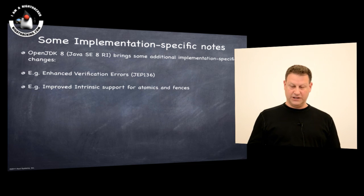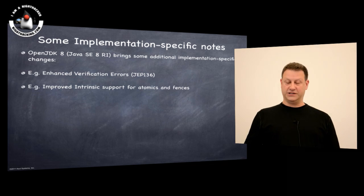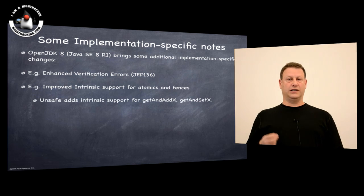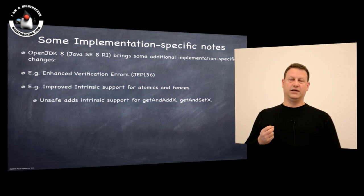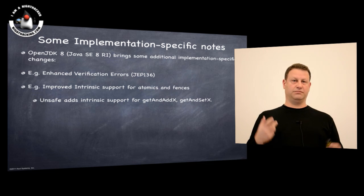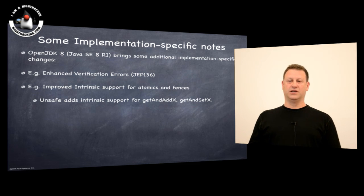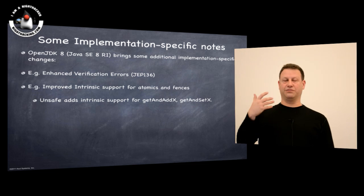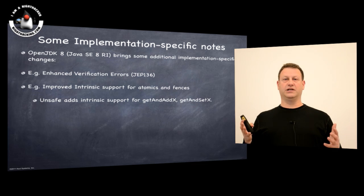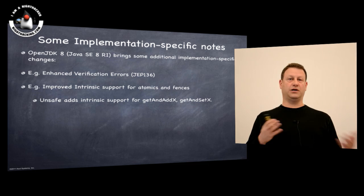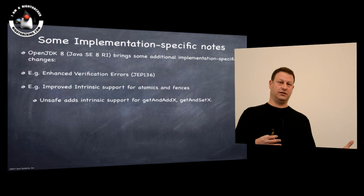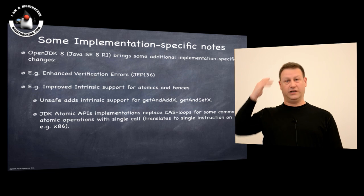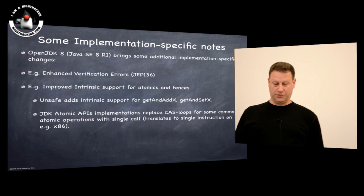We have dramatically improved intrinsic support for atomics and fences. Unsafe adds direct support for additional atomic operations like get and add or get and set. These operations have already been around through the atomic APIs in Java, but their implementation in previous releases was often very inefficient because they would be running loops of compare and swaps. In architectures that have direct support for a swap instruction or an atomic increment instruction, that can be reduced to a single instruction. X86 architectures are a good example. As a result, we get better speed for atomics once those are translated into the JDK.